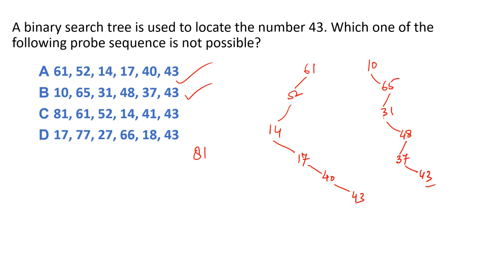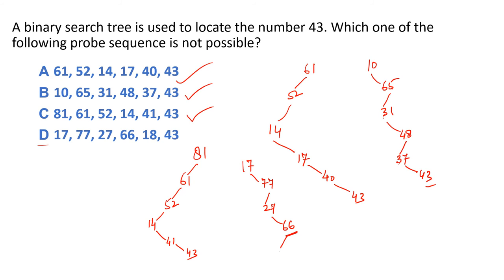C option: 18, 61, 52, 14, 41 (bada), 43 (bada) — yeh bhi sahi sequence hai. D option: 17, 77, 27, 66, aur phir 18. 18 ko check karne ke liye 66 se left mein jana padega, lekin 18, 27 ke right subtree mein hai — toh 18 yahaan nahi ho sakta. Is liye yeh probe sequence galat hai. Har ek valid probe sequence mein continuous elements ek dusre se linked hote hain, root se data value tak ek same chain mein.